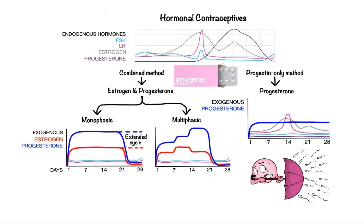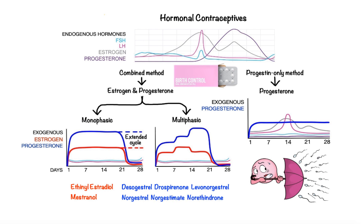To end with some examples of actual drugs used in birth control products: commonly found synthetic derivatives of estrogen are ethinyl estradiol and mestranol, and synthetic derivatives of progesterone are desogestrel, drospirenone, levonorgestrel, norgestrel, norgestimate, and norethindrone. Thank you for watching — I hope you found this video useful, and as always, stay tuned for more!